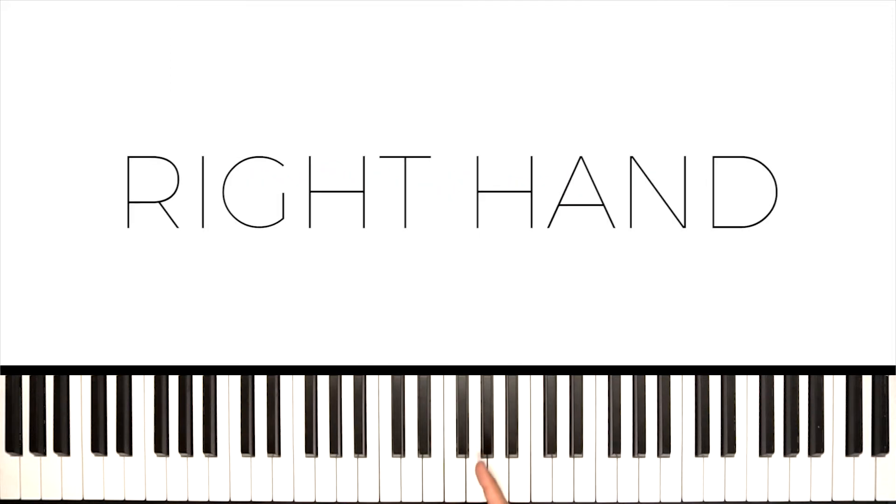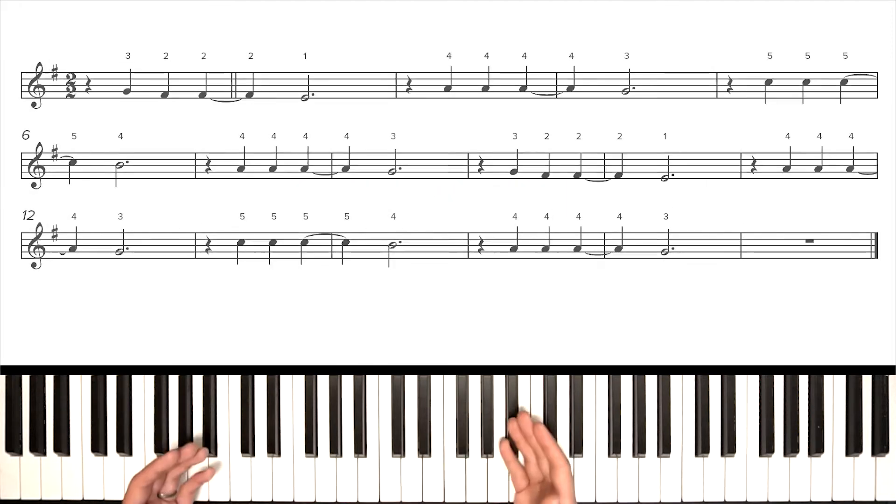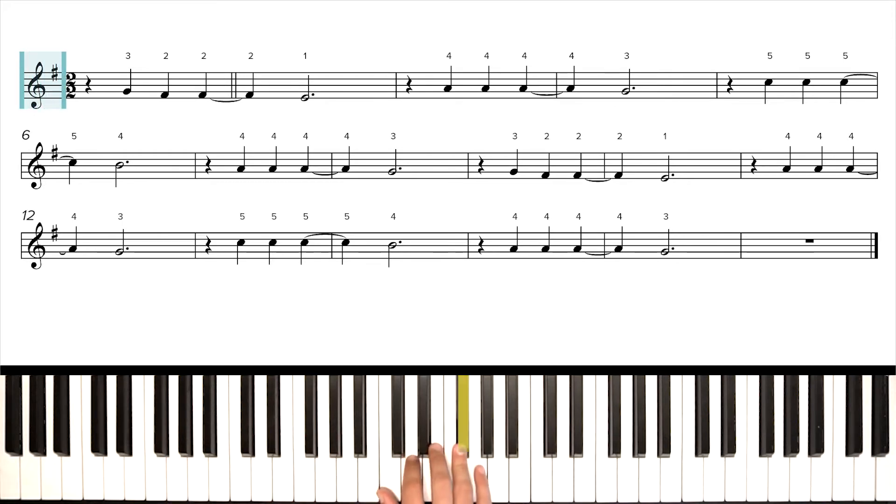Let's start by breaking this song down by learning the right-hand melody first. First step, let's take a look at our key signature. I see one sharp, that's an F sharp. That means we're either in the key of G major or E minor. Both of those keys have the same key signature of one sharp. But here, specifically, we're in the key of E minor.